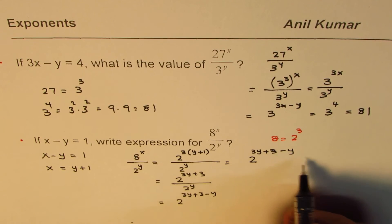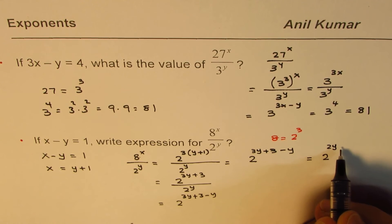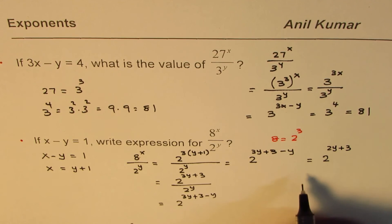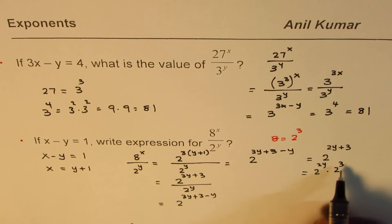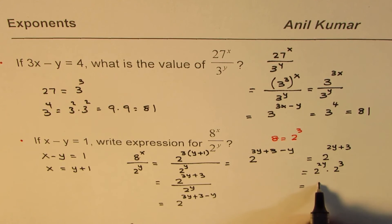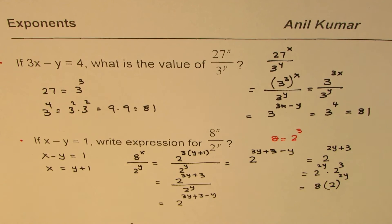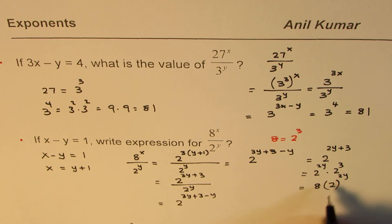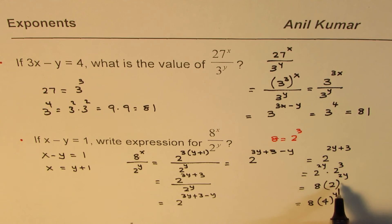3y minus y is 2y, so we get 2 to the power of 2y plus 3. This can be written as 2 to the power of 2y times 2 to the power of 3. Since 2 to the power of 3 is 8, this becomes 8 times 2 to the power of 2y. You could also write 2 to the power of 2y as 4 to the power of y, since 2 squared is 4. So the expression can also be written as 8 times 4 to the power of y. There are different equivalent forms of this expression.